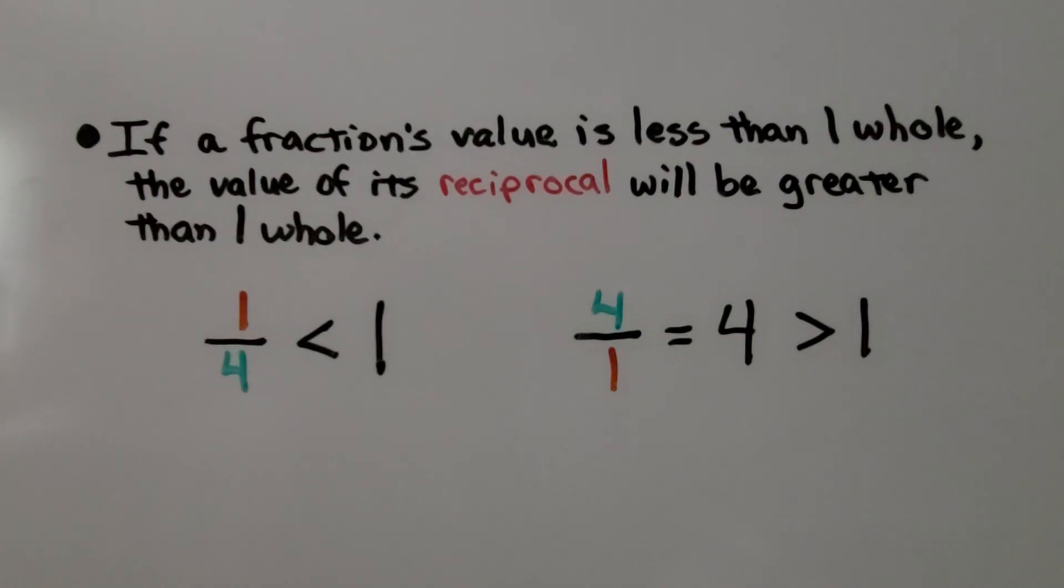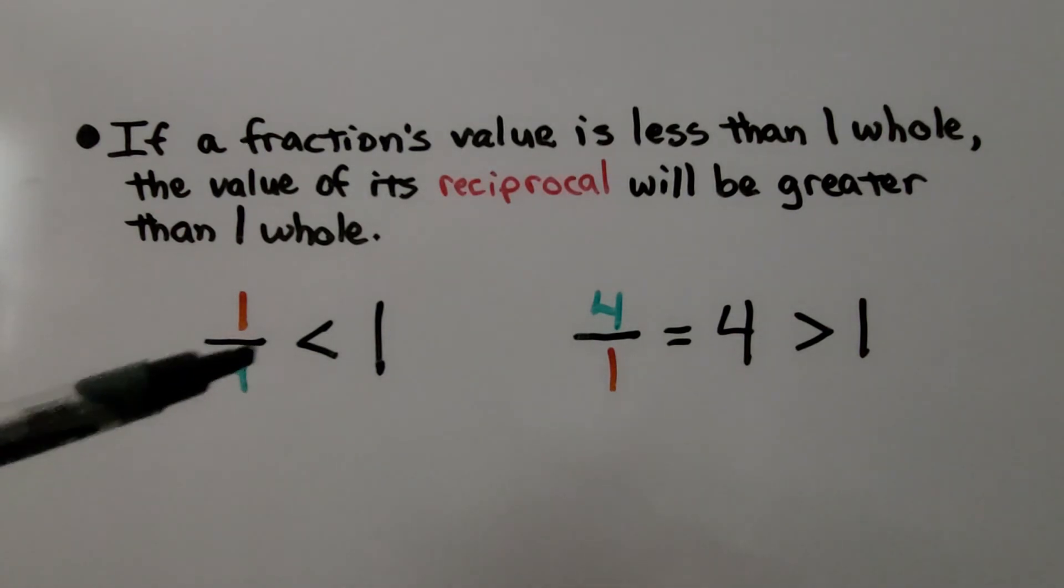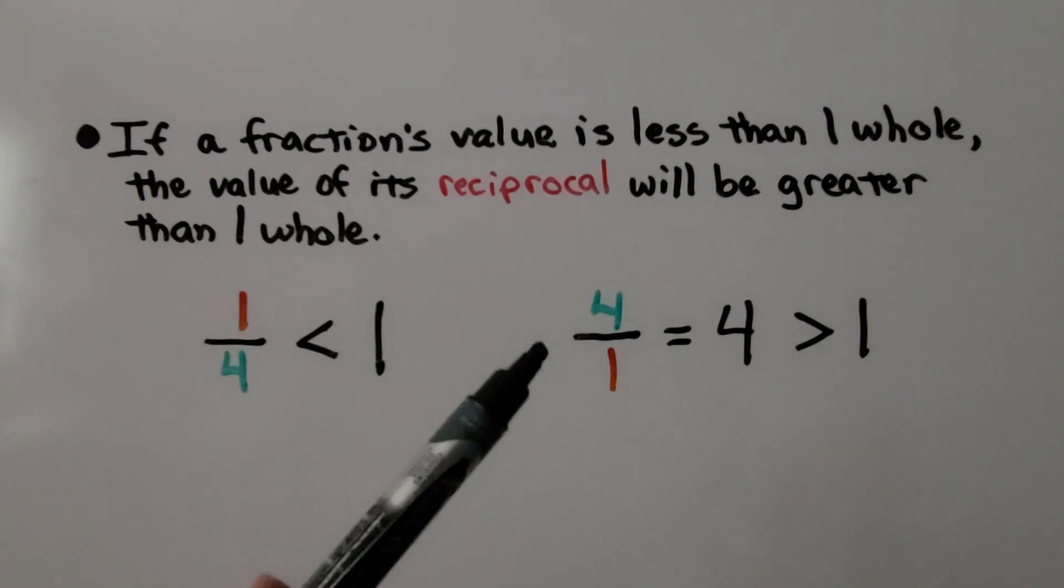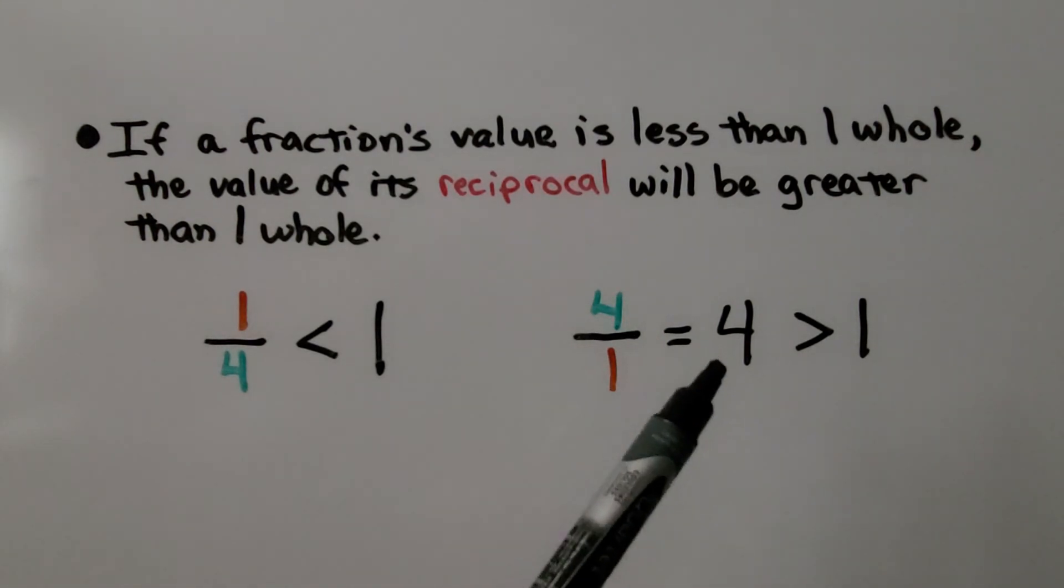If a fraction's value is less than 1 whole, the value of its reciprocal will be greater than 1 whole. We have 1/4. That's less than 1 whole. We write its reciprocal. Flip it around. We have 4 over 1. Well, that's equal to 4 whole, and that is greater than 1.